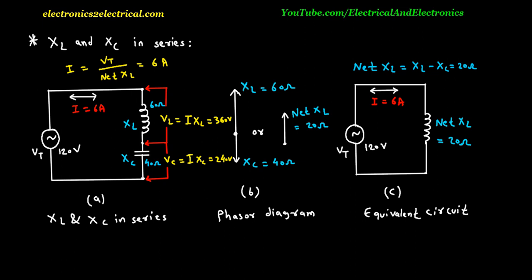The current I is the same through both the inductive reactance and capacitive reactance. Since they have opposite phase angles, the net reactance in series is the difference between XL and XC, which results in less reactance than either one. Figure C shows the equivalent circuit with a net reactance of 20 ohms and AC voltage source of 120 volts.